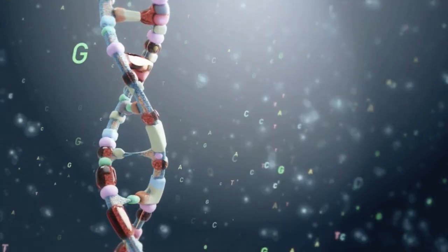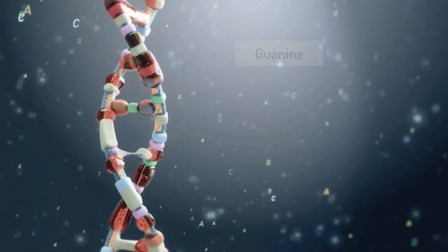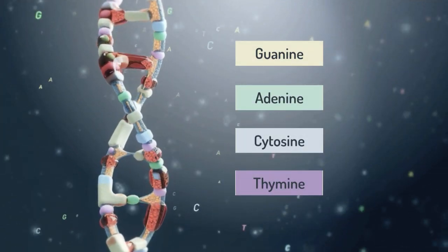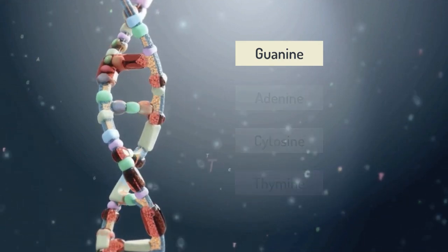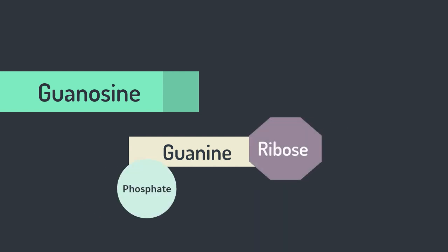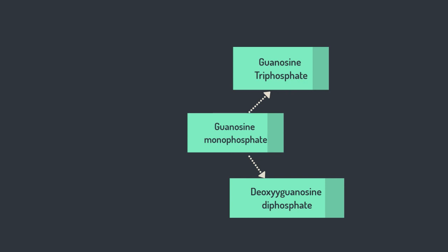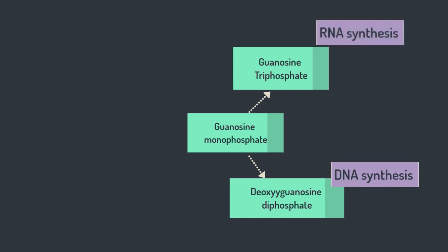Guanosine brings to mind nucleotides — the little building blocks of DNA: guanine, adenine, cytosine and thymine. But guanosine is slightly different. Guanosine is the combination of guanine bound to ribose, and guanine can be phosphorylated and manipulated into various other versions of itself depending on how much phosphate is added or what other molecules are removed. These resulting molecules have functional roles in the cell cycle, signal transduction, and RNA splicing, which is important for protein synthesis. As shown on the diagram, guanosine is needed for RNA, DNA and glycoprotein synthesis.